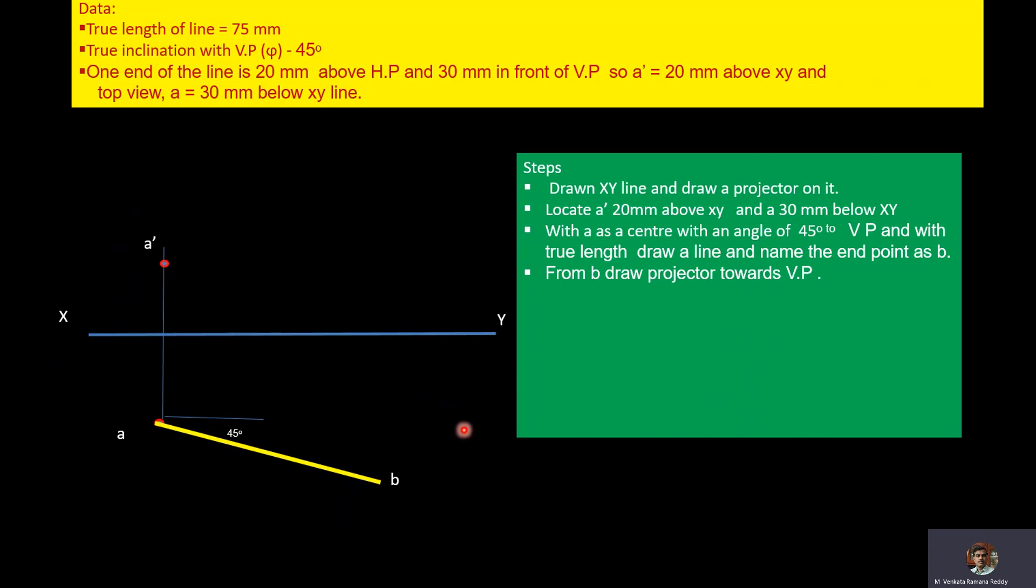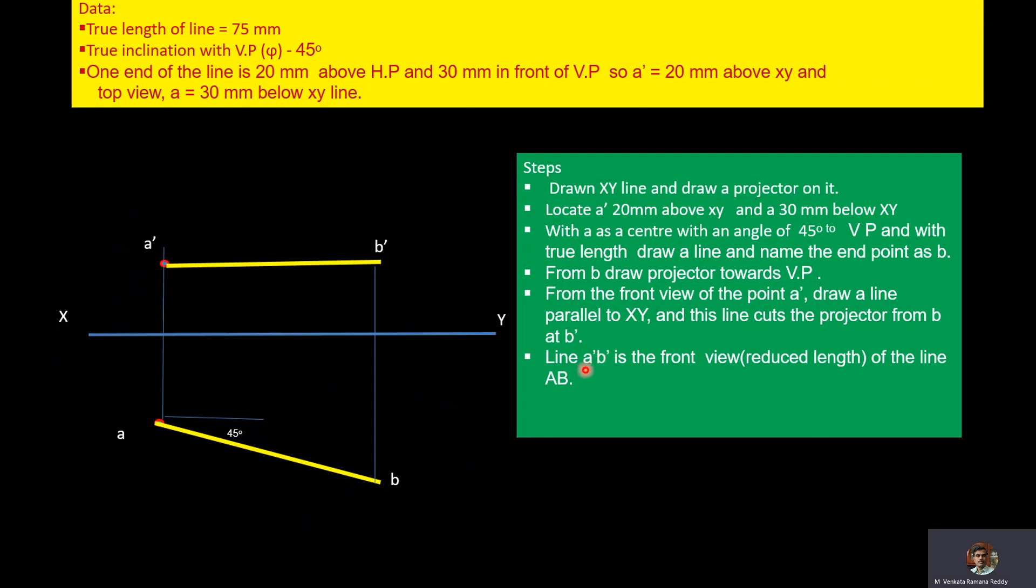At B, draw a projector towards the vertical plane. And then, from the front view of point A, draw a line parallel to XY. This line cuts the projector from B at B'.